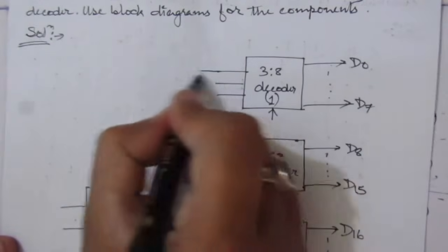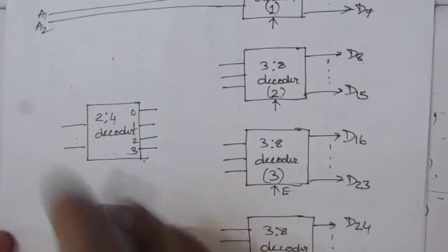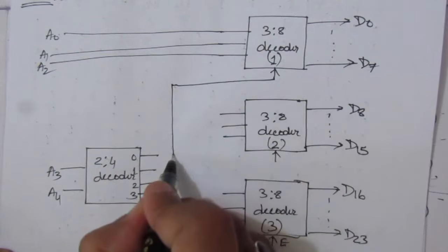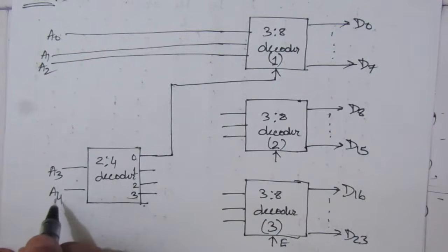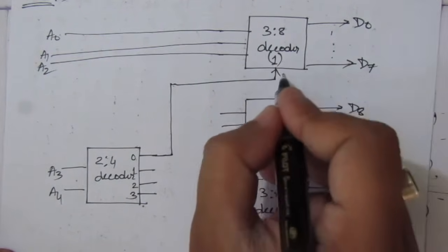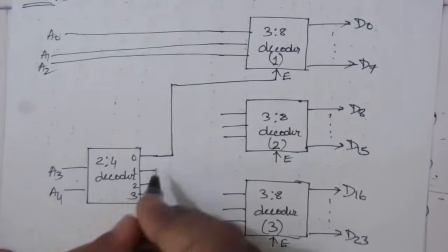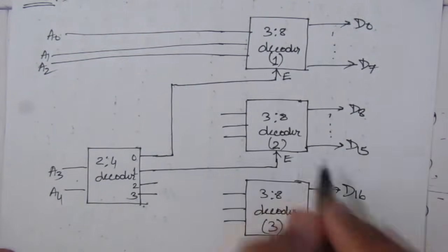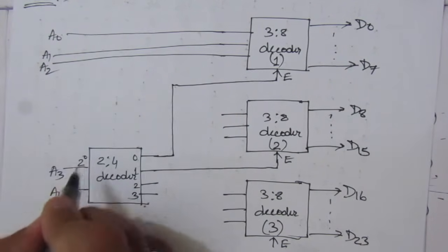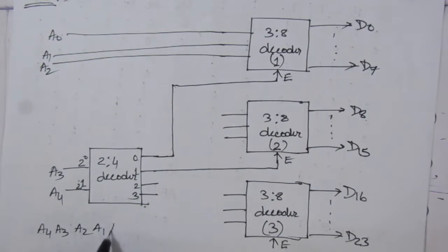Now let us assign the inputs. The 5-bit input is A4, A3, A2, A1, A0 — where A4 is the most significant bit (2¹) and A3 is 2⁰ for the 2-to-4 decoder. A2, A1, and A0 are the 3 lower bits connected to all four 3-to-8 decoders.